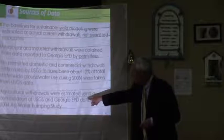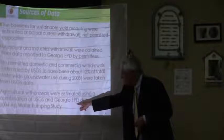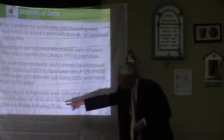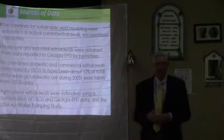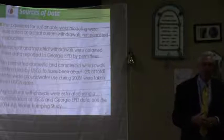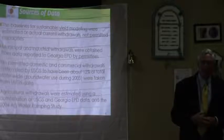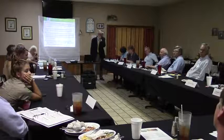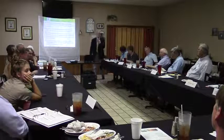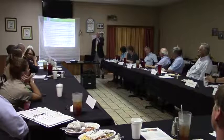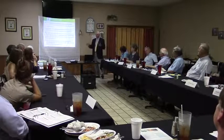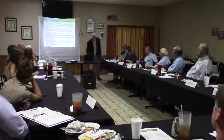Agricultural water was estimated using a combination of USGS data, water use data, and the 2004 agricultural water pumping study. We didn't use the meter data at the time because the dataset wasn't robust enough. What we did use from the commission was the sources — groundwater versus surface water — and the locations of withdrawals. We estimated agricultural use based on crop type. Now we're getting those meter data and going back to look at this again.